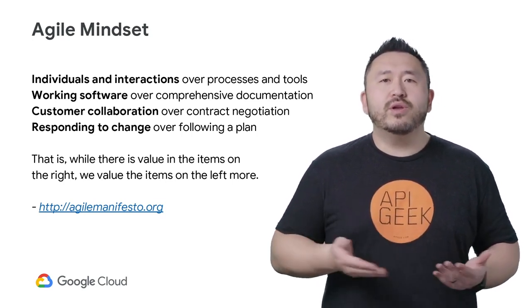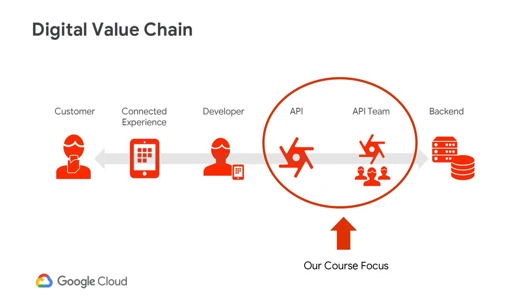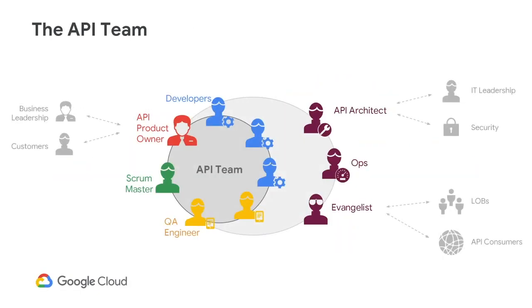Take a moment to read through it and visit their website. Agile can be adopted in many different software settings within the digital value chain. For our course, we focus on the agile method of developing APIs by the API team. A core part of agile is to have one cross-functional API team.